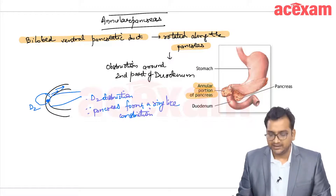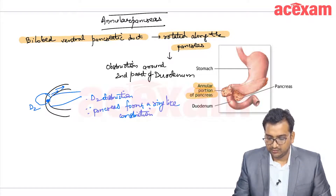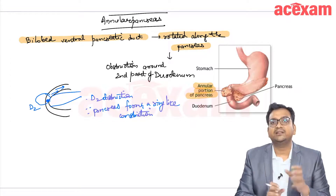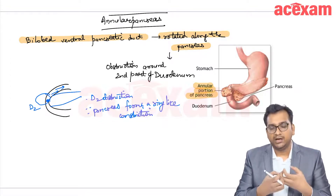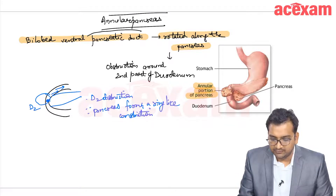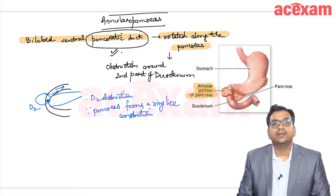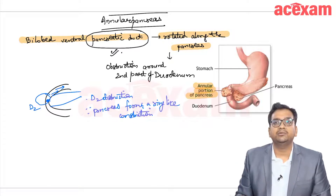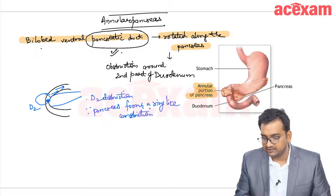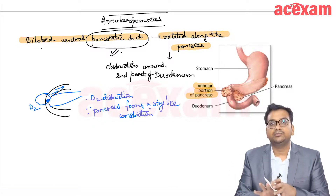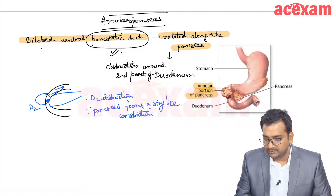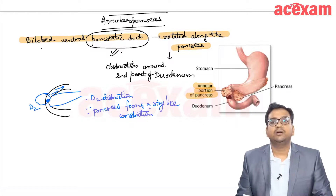This is also a congenital anomaly. Now, a complete ring or annulus of pancreas is not mandatory for the diagnosis, but an annulus of the pancreatic duct is seen in all cases. So the obstruction is mainly because of the pancreatic duct. The pancreas is seen surrounding the duodenum in up to 70 to 80 percent of cases, but the duct is seen in all cases. There is a bilobed ventral pancreatic duct and an annular portion of the pancreas which creates a D2 obstruction. Since this is D2 and the papilla is here, there is pre-ampullary obstruction.